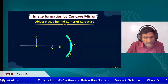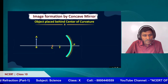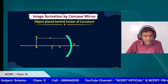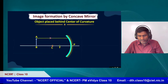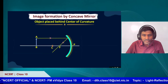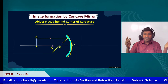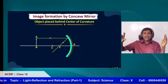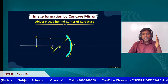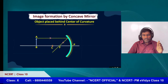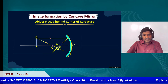The center of curvature is the center of the imaginary sphere. An object AB is placed beyond the center of curvature. We draw the ray diagram: from A, draw a parallel ray — according to rule number 1, it goes through the principal focus F after reflection. For the second ray, we pass it through the center of curvature C, so it returns in the same path. Both rays meet at a point, giving the image A1B1 between C and F.